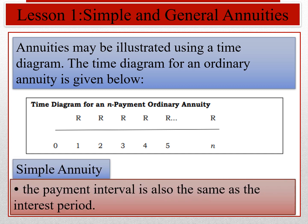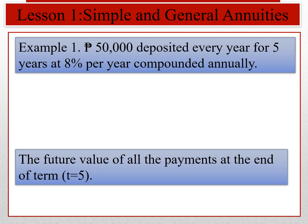Simple annuity is when the payment interval is the same as the interest period. Example 1: 50,000 deposited every year for 5 years at 8% per year compounded annually. This is an example of a simple annuity because the payment interval is every year and the interest period is annually — they are equal. That is why it is a simple annuity.